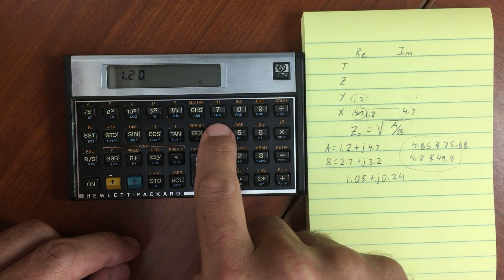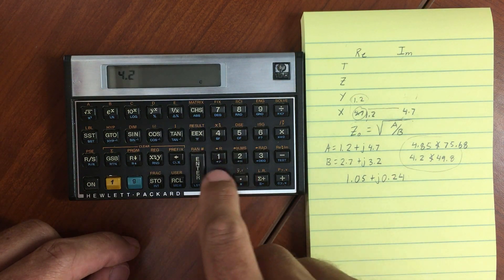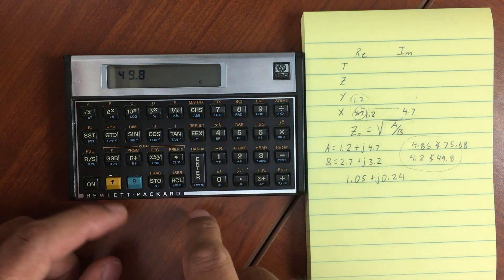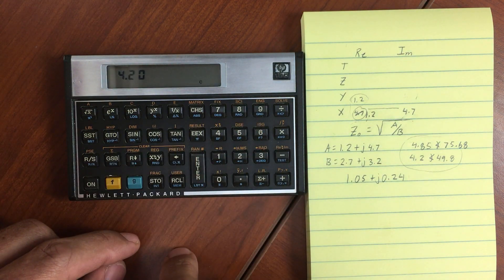Let's add the second number. 4.2. And 49.8. Make a complex number.